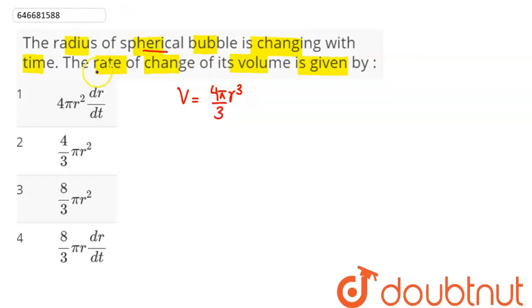Now we need to find out the rate of change of its volume. So rate of change of volume means differentiation of volume with respect to time. So this gives us dV/dt.